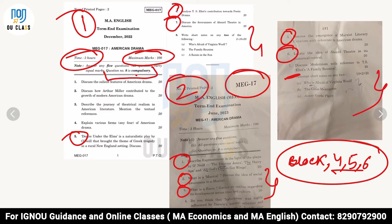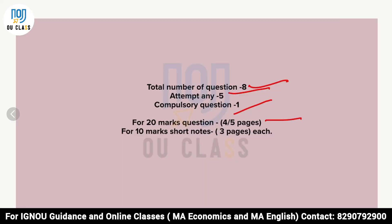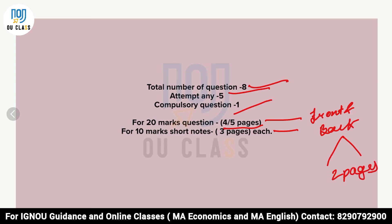As you can see, the total number of questions is eight, and question number eight is compulsory in both question papers. The eighth question will be in the form of short notes — you have to do any two short notes out of three. For your 20-mark questions, you need to write at least four to five pages — and when I say four to five pages, I mean front and back, so front and back count as two pages. For your 10-mark short notes, you have to write three pages for each short note.